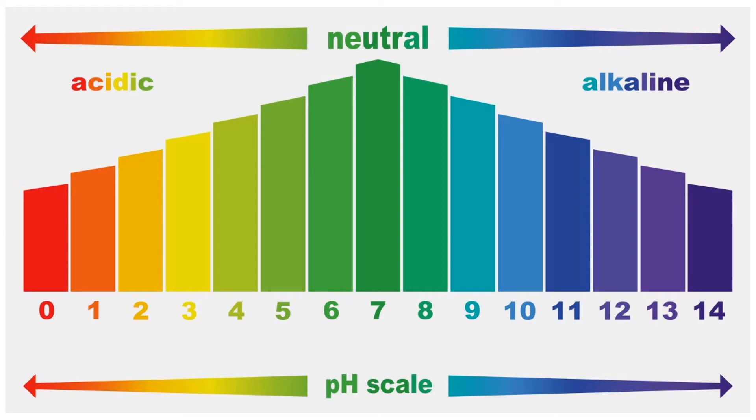Currently, the pH of the ocean is about 8.1. The ocean is basic or alkaline. But as a consequence of carbon emissions, the pH of the ocean is slowly dropping over time and becoming more acidic.